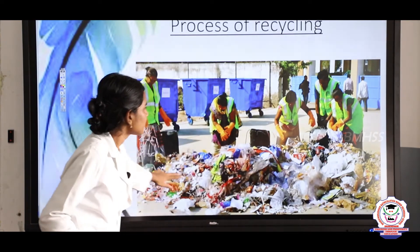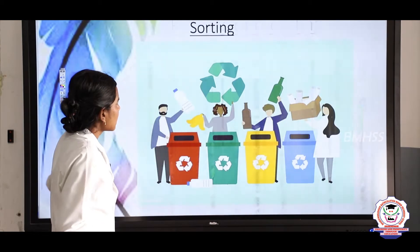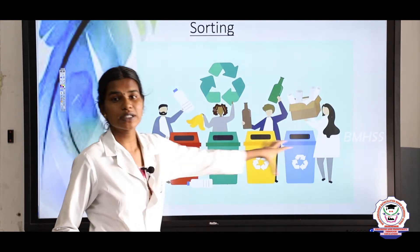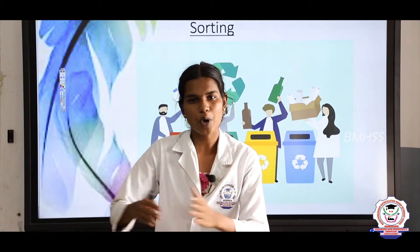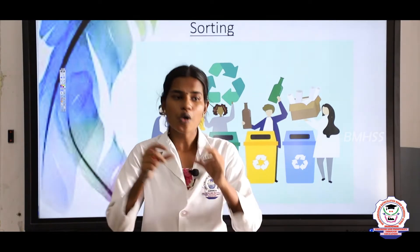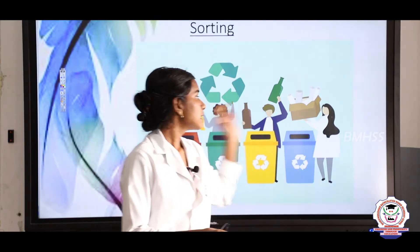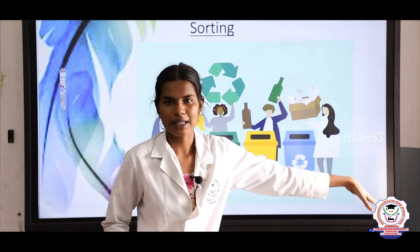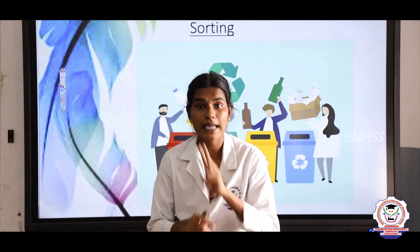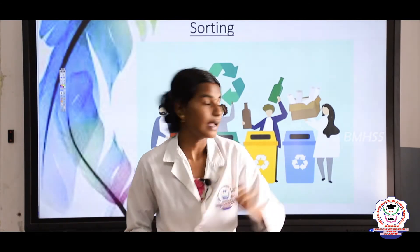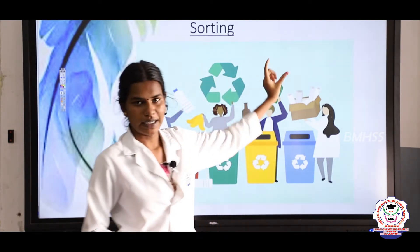The second step is sorting. They sort out the products, which means they divide the products according to type, color, and material. This is the second process of recycling — sorting.